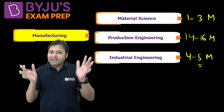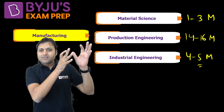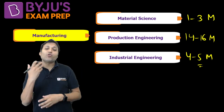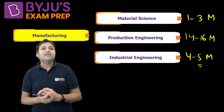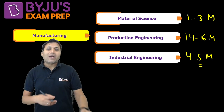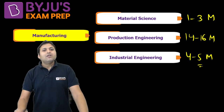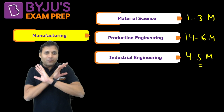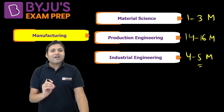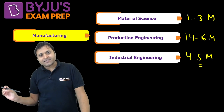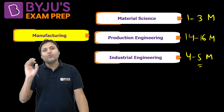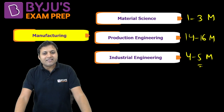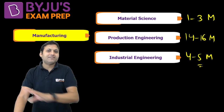These subjects are divided into three major portions: thermal, design, and manufacturing. For preparation, manufacturing — which involves material science, production, and industrial engineering — should always be taken last, whether you are starting preparation or doing revision.